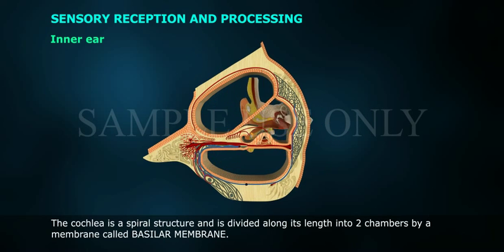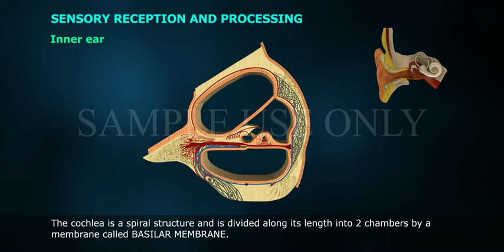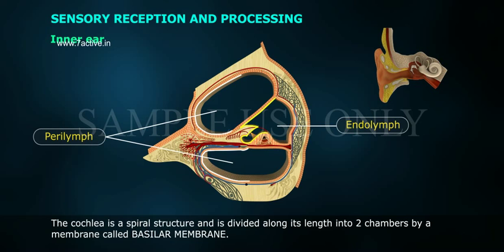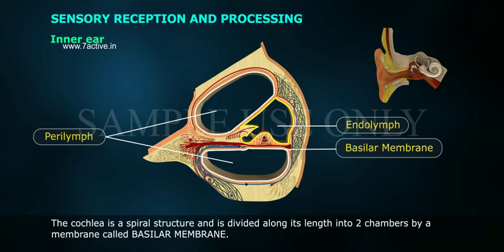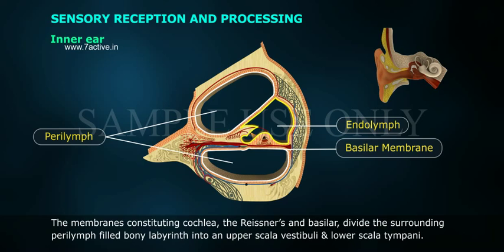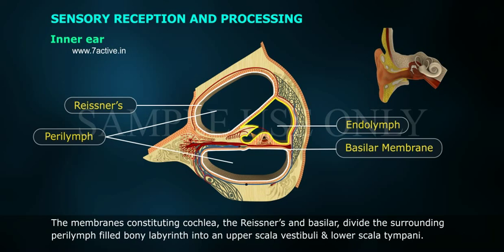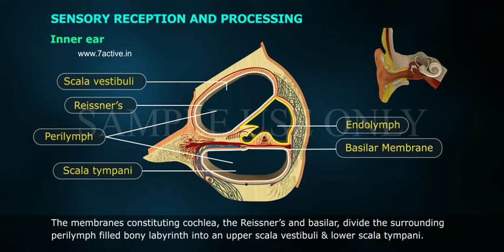The cochlea is a spiral structure and is divided along its length into two chambers by a membrane called the basilar membrane. The membranes constituting the cochlea, the Reissner's and basilar, divide the surrounding perilymph-filled bony labyrinth into an upper scala vestibuli and lower scala tympani.